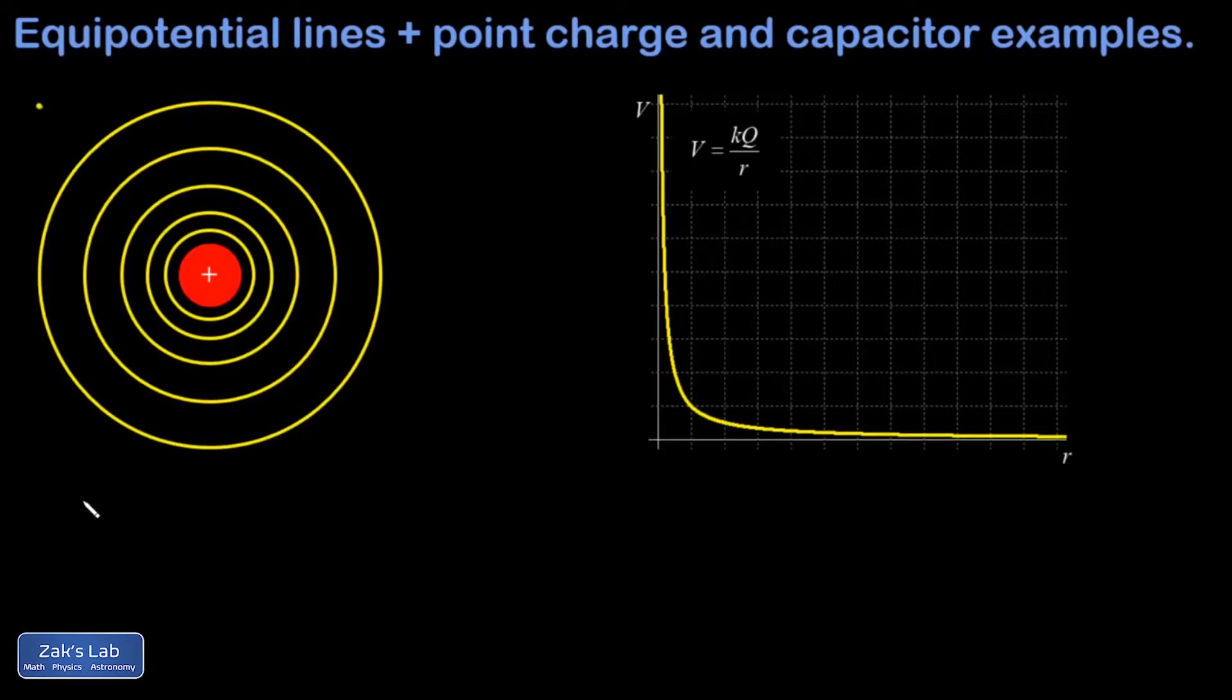The reason this is true is because the potential as a function of separation distance is given by kq over r for a point charge. So as long as I stay at the same value of r, the voltage is going to be the same. Well, what does it mean to stay at the same value of r? It means you're on a circular path.